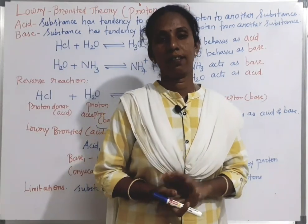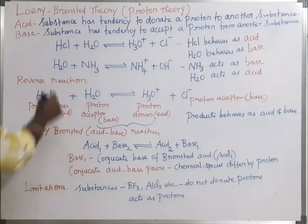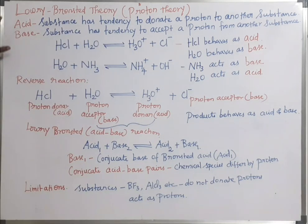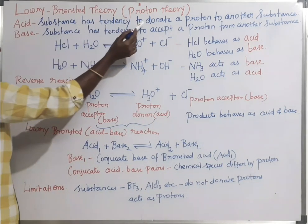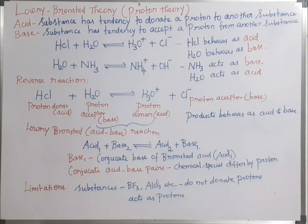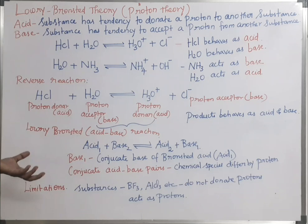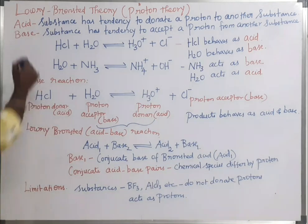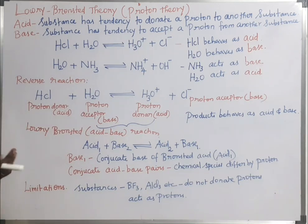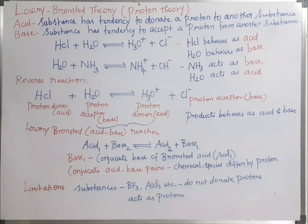The Lowry-Bronsted theory is called the proton theory. Based on this theory, an acid is a substance which has a tendency to donate a proton to another substance. A base is a substance which has the capacity to accept a proton from another substance.